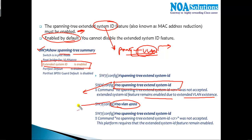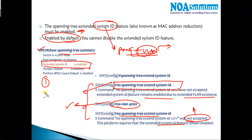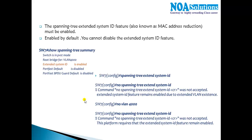Even if you try to remove the extended VLAN from the switch first and then disable the extended system ID, it is still not accepted — because this platform mandatorily requires the extended system ID feature to remain enabled. To summarize, the major prerequisites for extended VLAN support are: VTP must be in off or transparent mode, and extended system ID support must be present. Note that extended VLANs are not supported on all platforms.